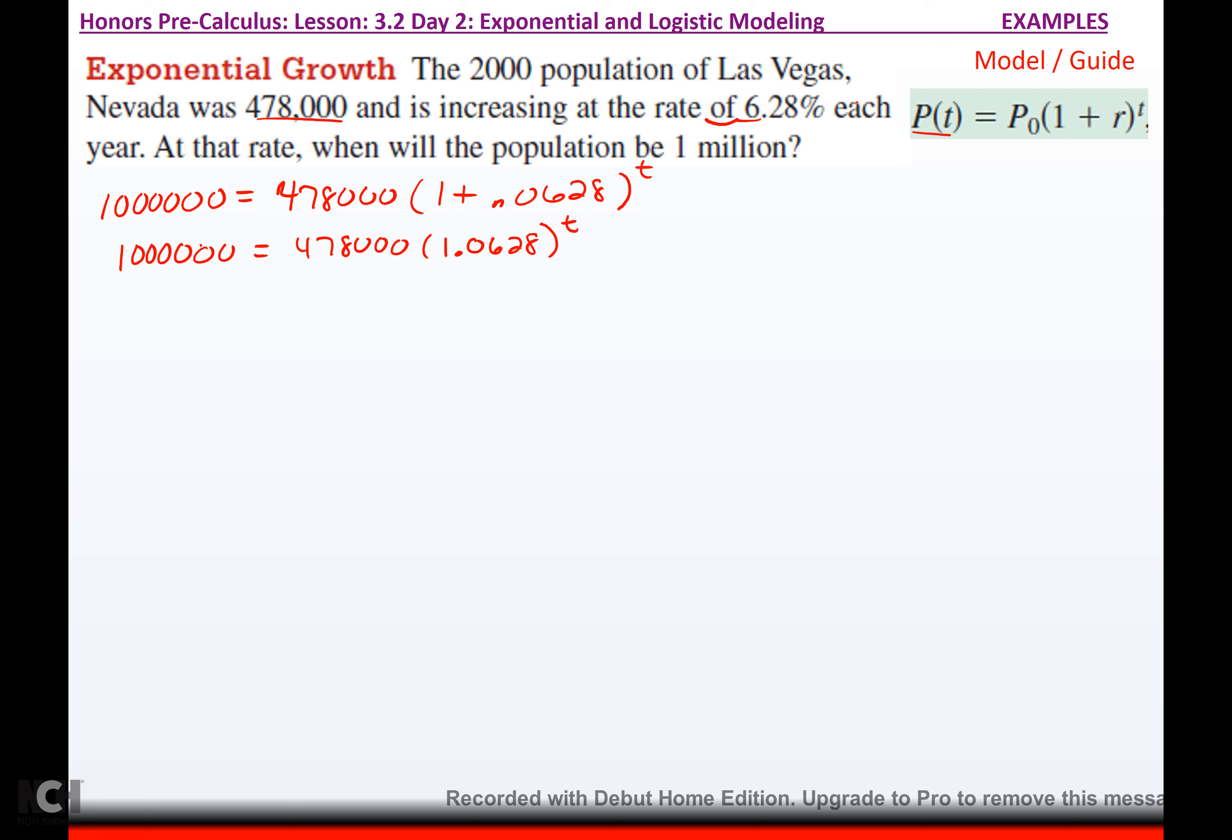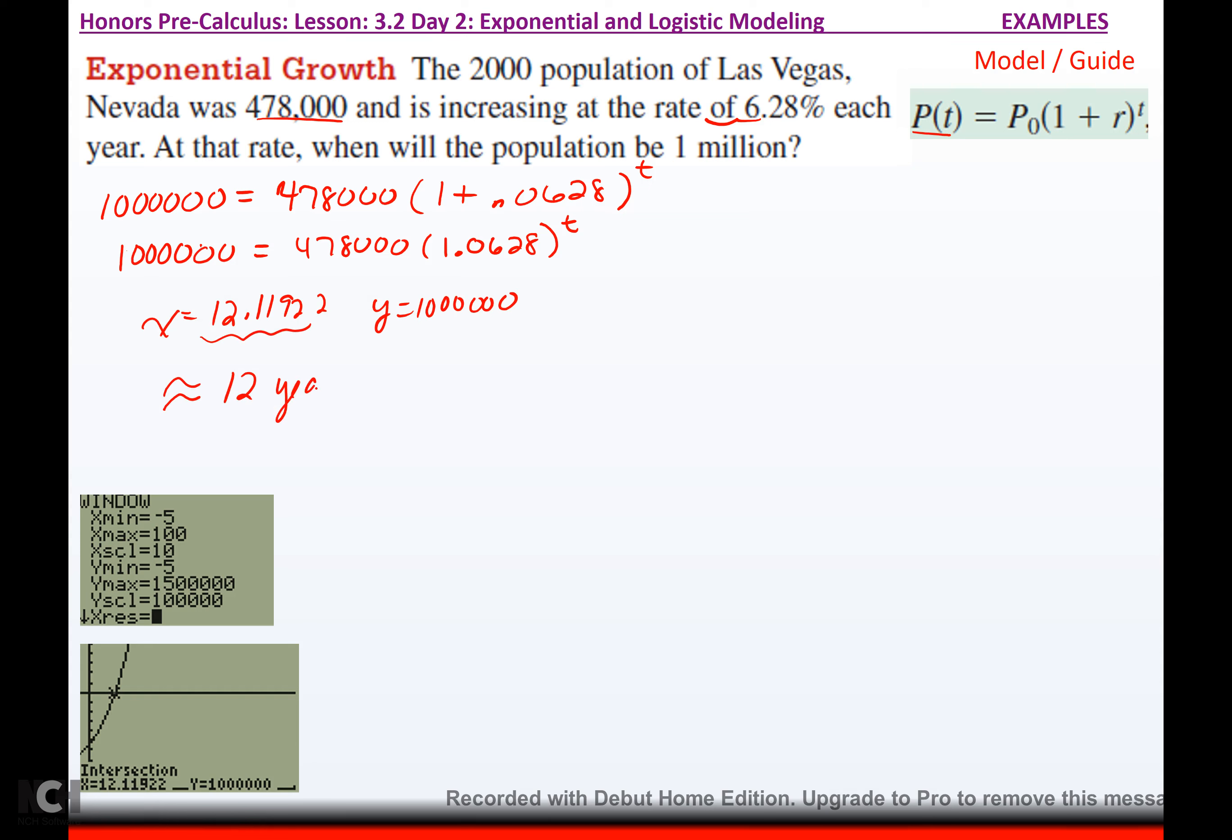I can clean that up a little bit and say a million equals 478,000 times 1.0628 to the t. So, there's my population model for Las Vegas, Nevada in the year 2000. Now, you can't solve this algebraically at this point. Remember, you don't know how to solve for your variable when your variable is the exponent. That's what we are going to learn logarithms for. But at this point, we don't have those tools. So, you're going to type in a million for y1 and this equation for y2. Where they intersect is when x is 12.11922, y will be a million. So, it's going to take approximately 12 years. But they want to know when will the population be a million. Well, if the year was 2000 when this data was gathered, then 12 years later would be 2012.